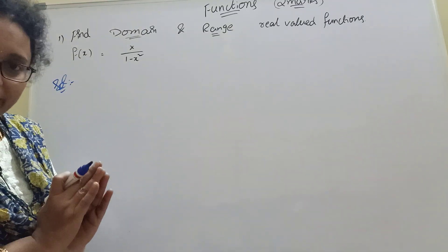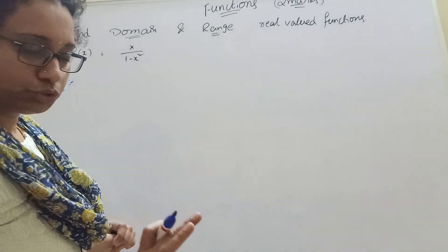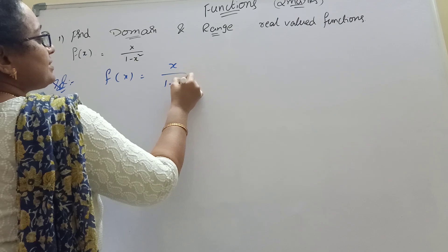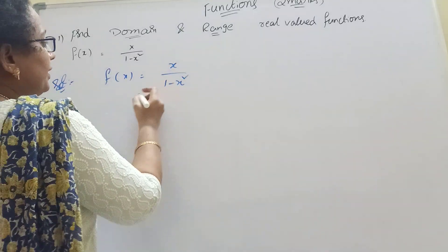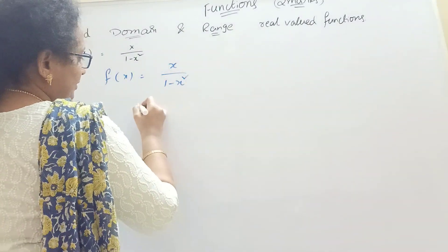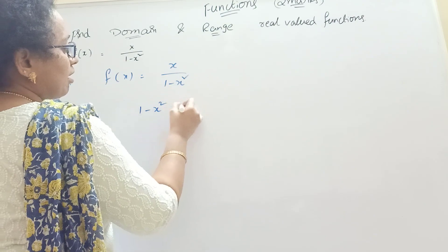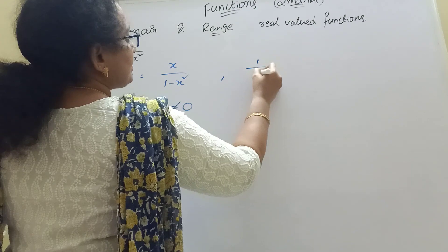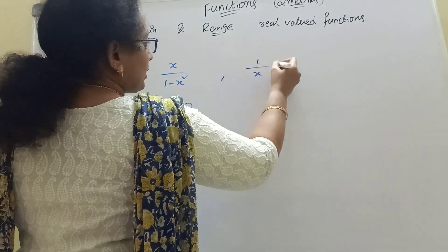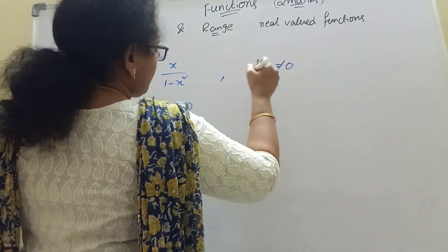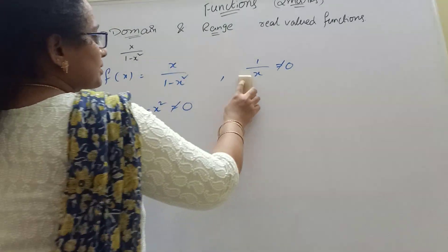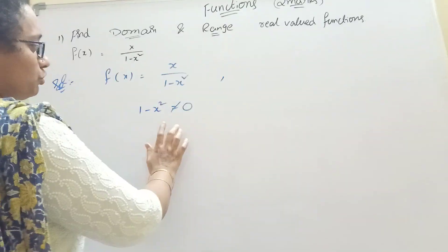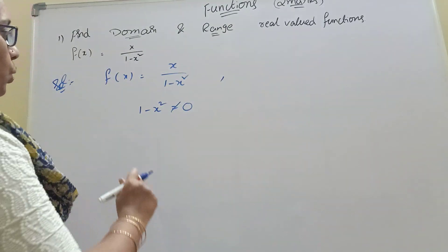The denominator should not be equal to 0. First, what is given — write here: x by 1 minus x square. Here the denominator is 1 minus x square. That is why you write: 1 minus x square is not equal to 0. Because it is 1 by x form — if there is a 1 by x term, then x is not equal to 0. A function: 1 minus x is not equal to 0.